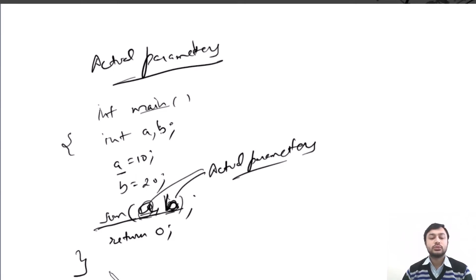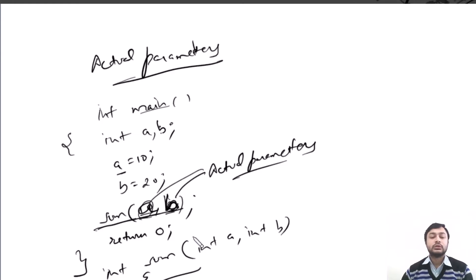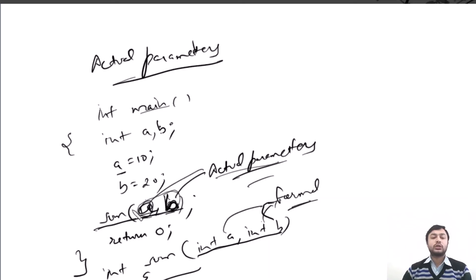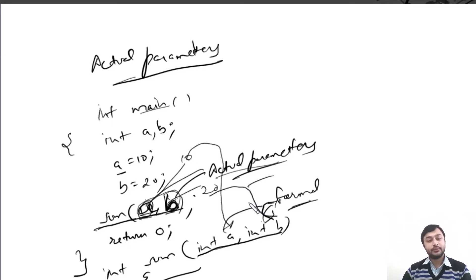Here I define the function as int sum(int a, int b) — this parameter is known as formal arguments. The formal parameters are those parameters which are defined in the function header of the function definition, and actual parameters are those parameters which are used in the function call. When you call this function, the value 10 is copied into formal variable a, and the value 20 is copied into formal variable b.